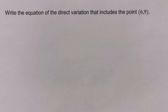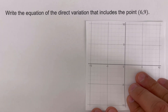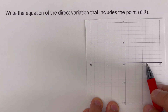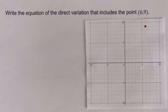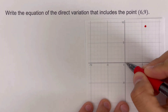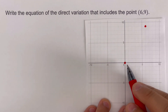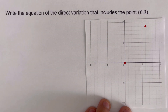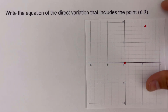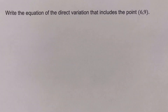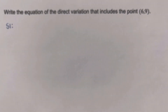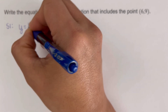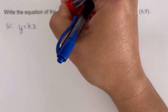So let's take this first example: write the equation of the direct variation that includes the point (6, 9). To make this more visual, I have this graph here. We go ahead and sketch the point (6, 9), so x is 6 and y is 9. We remember that (0, 0) is also one of the points because the line should pass through the origin. The first step is to determine the value of k. Remember that our equation is y equals kx.